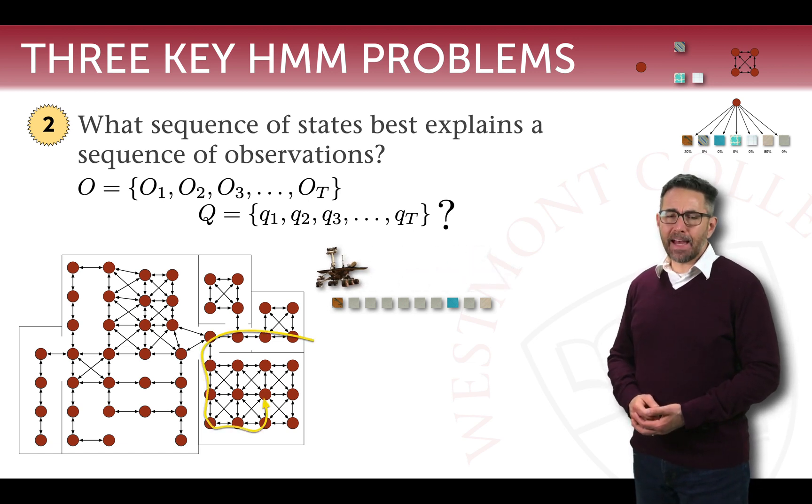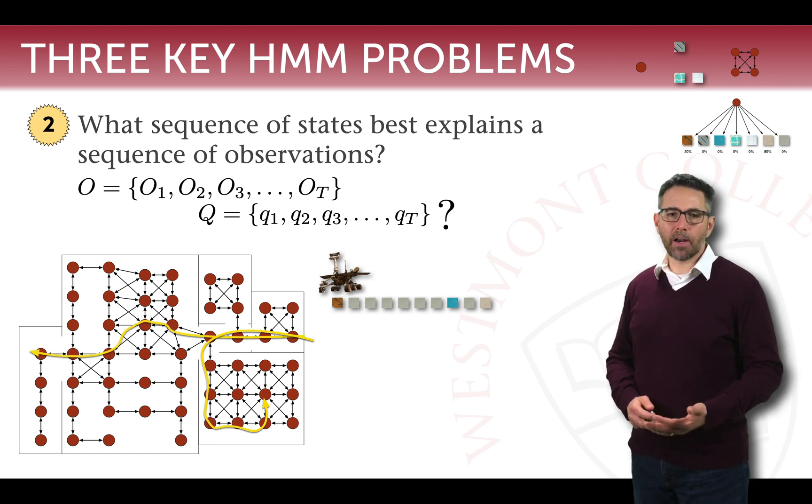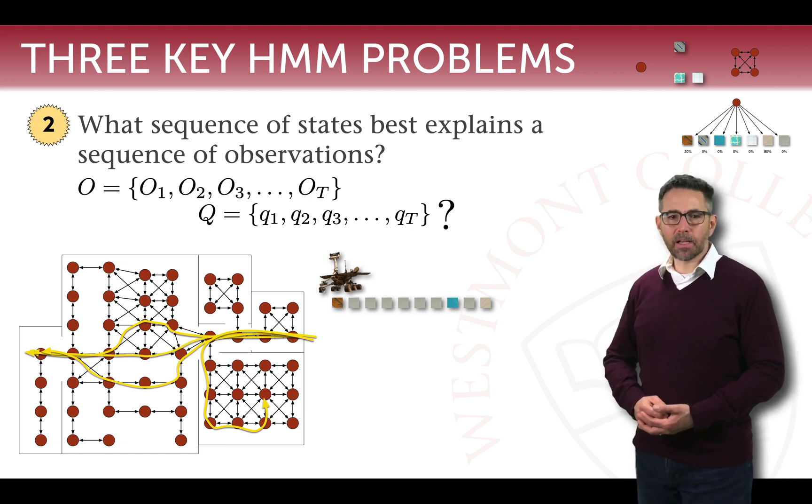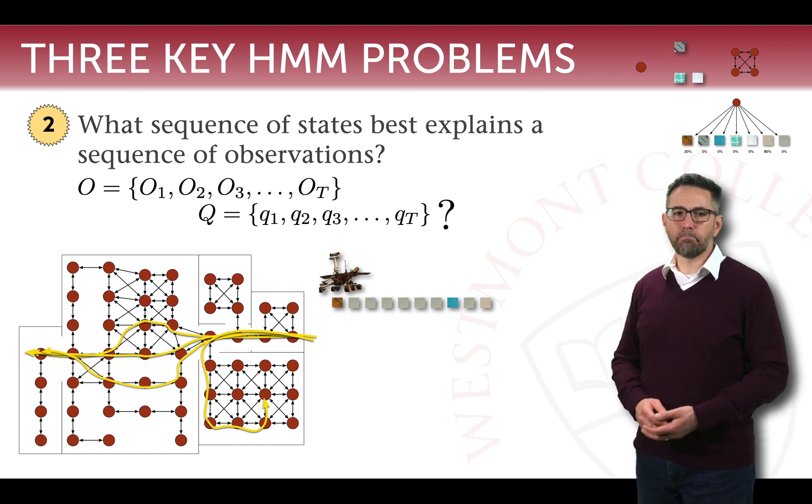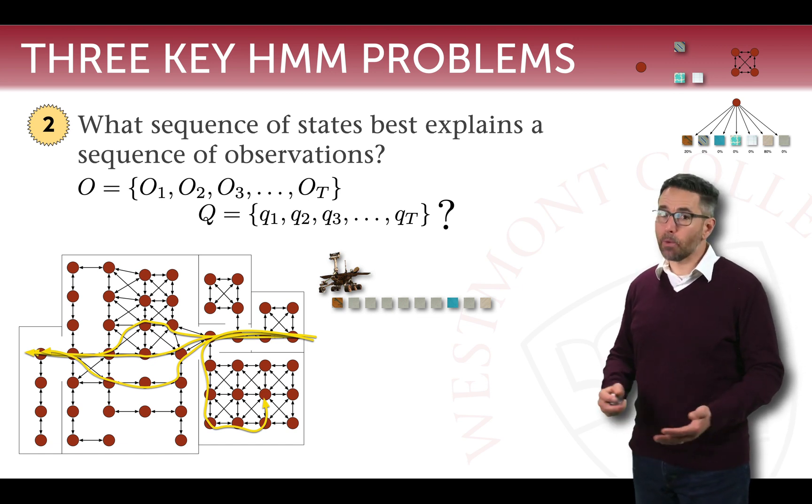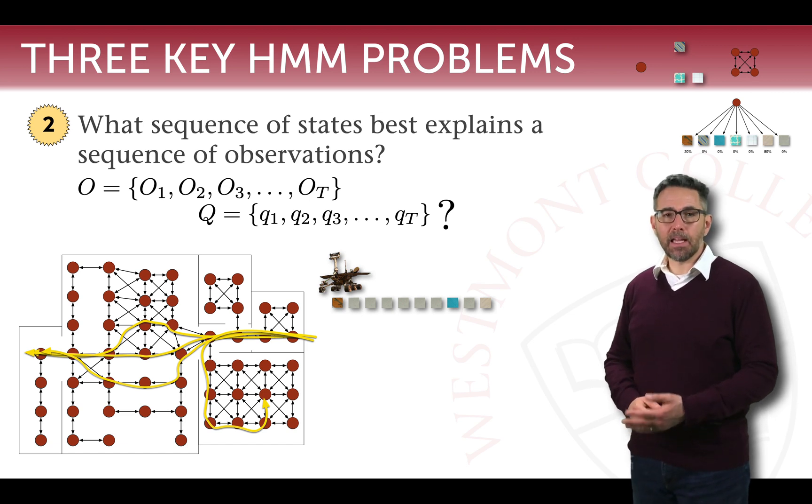As it considers them, it realizes that possibly it moved through one or two or three or four, any number of different paths through the world. All of them are possible because all of those floor coverings could possibly be seen, maybe with a very low probability, but nevertheless possibly be seen in each one of those states in turn.